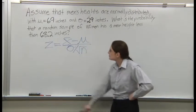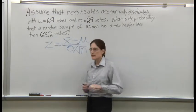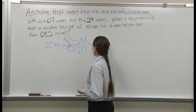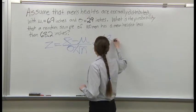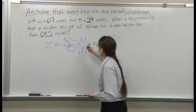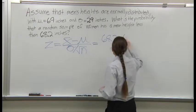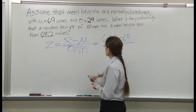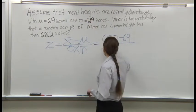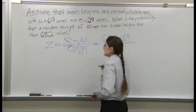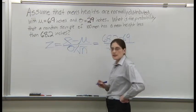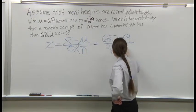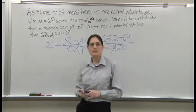What's X bar? The mean of the sample. And mu? The mean of the population. Sigma is given. Standard deviation is 2.9. And we measured 100 men.